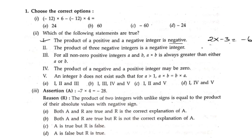Next, the product of 3 negative integers is a negative integer. Let us take 3 negative integers: minus into minus is plus, and plus into minus is minus. So we are getting negative, so the second statement is also true.